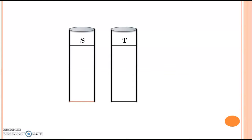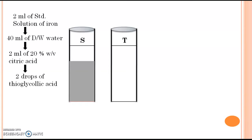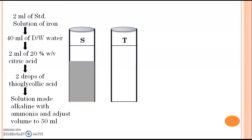First, how to prepare the standard solution: take 2 ml of standard iron solution — for this we use ferric ammonium sulphate, which contains iron. Then add 40 ml of distilled water, followed by 2 ml of 20% w/v citric acid, and two drops of thioglycolic acid. Then make the solution alkaline with ammonia. After making the solution alkaline, you will get a purple color.